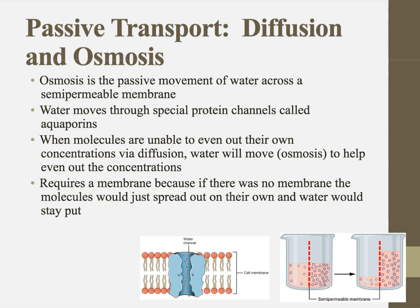Before we move into osmosis, let's talk about molecular movement and plan A and plan B. In this scenario, I have some kind of solute — let's say these purple things are glucose molecules — and we can clearly see there's an area of high concentration and low concentration of glucose. Plan A is always for simple diffusion to take place. If there were a way for some of these glucose molecules to just move to where it's less crowded, that's what they would be doing.